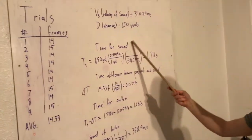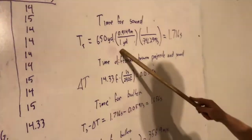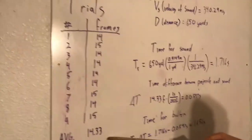So we started out by calculating the time for sound to reach the target, which was our distance divided by the speed of sound, 1.716 seconds.